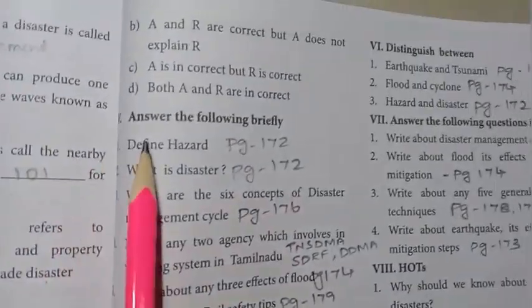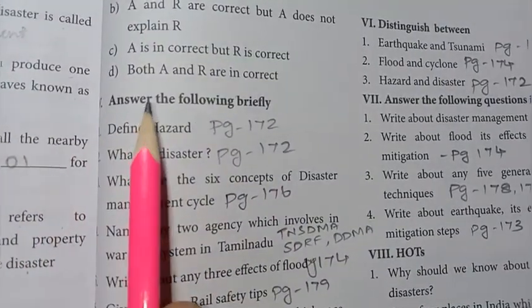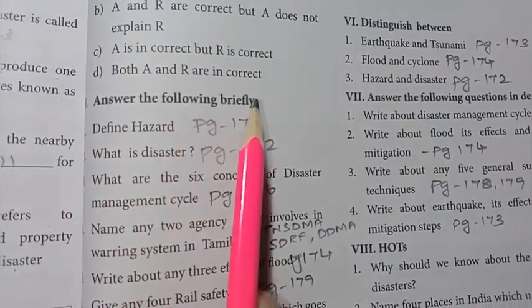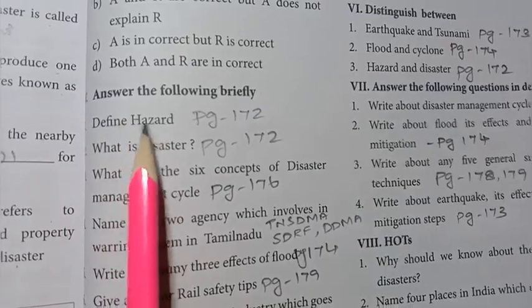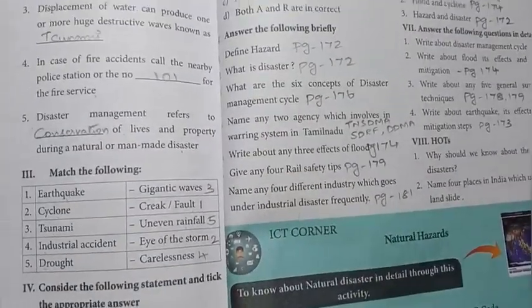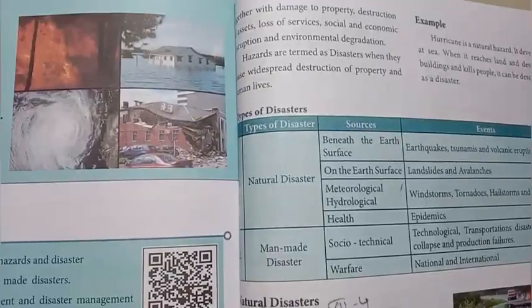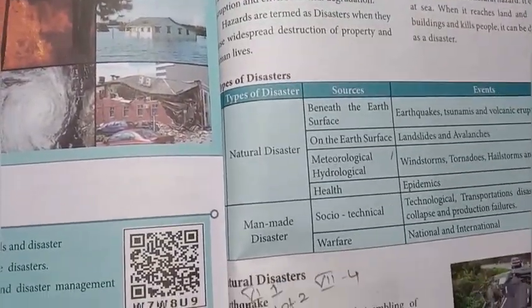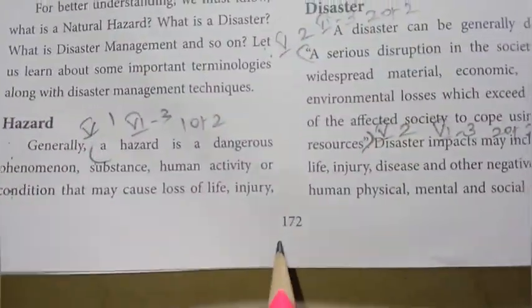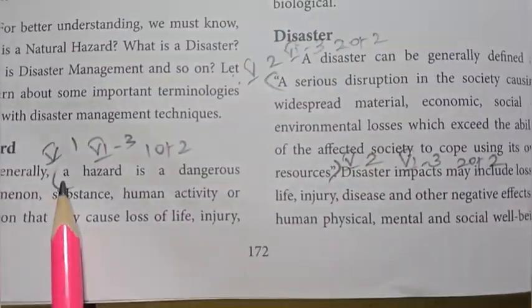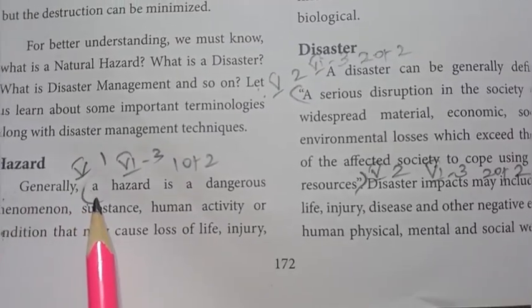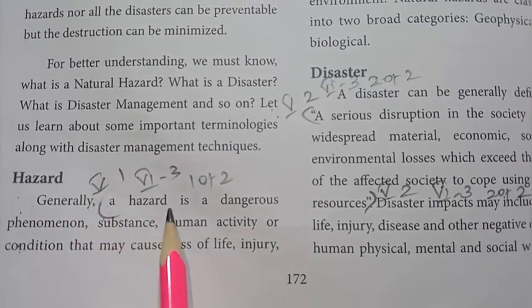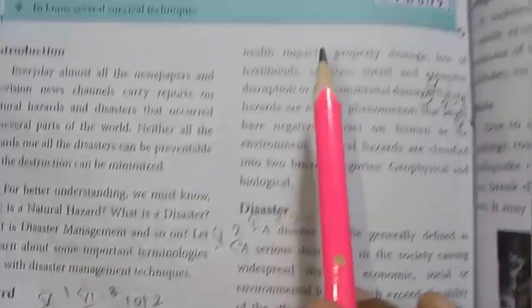Move on to Section V: answer the following briefly. First question: define hazard. Refer to page number 172. A hazard is a dangerous event — refer to the three lines on that page up to 'disruption or environmental change.'